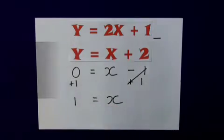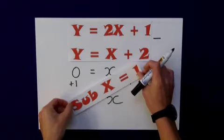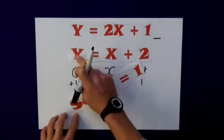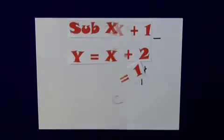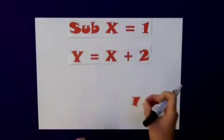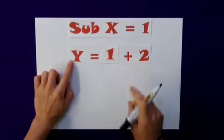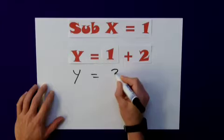One is equal to x. So now what I'm going to do, I'm actually going to use my knowledge that I've found x is equal to one into one of these equations to determine my y value. So substituting my x is equal to one in there, quite simply, y is equal to one plus two. So my y value is equal to three.